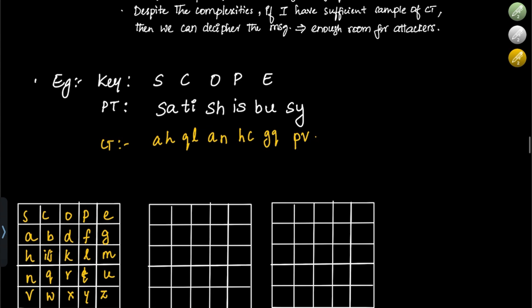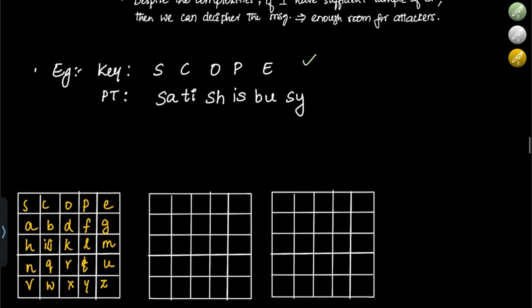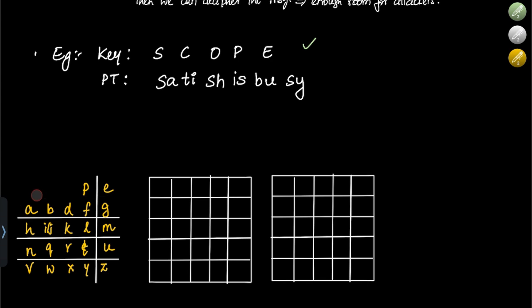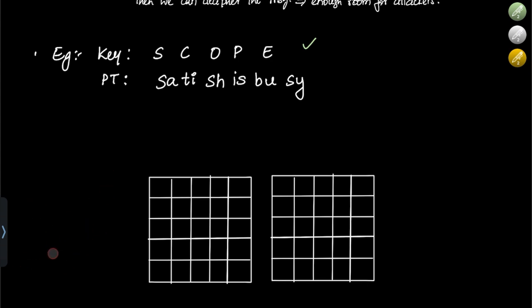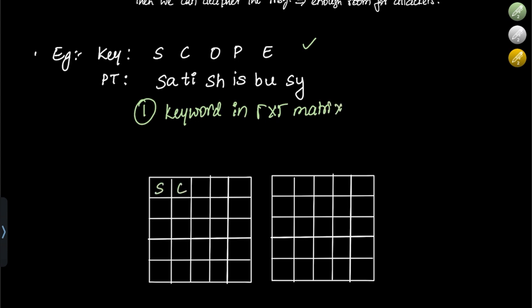Let us look at another example problem. The key given is SCOPE. The first step is to write the keyword in the 5×5 matrix: S, C, O, P, E.